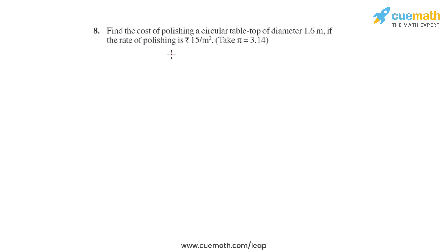Question 8 of this exercise says: find the cost of polishing a circular tabletop of diameter 1.6 meters if the rate of polishing is ₹15 per square meter. Take π = 3.14. So basically, we are polishing a circular table.